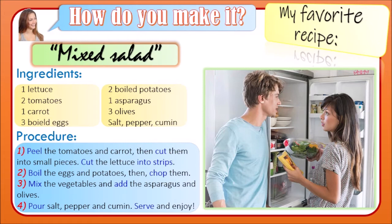Now we continue with the recipe, since it's part of your video exposition. The question is: how do you make it? How do you design and prepare your recipe? We're going to talk about mixed salad. According to this recipe, first we consider the ingredients: one lettuce, two tomatoes, one carrot, three boiled eggs, two boiled potatoes, one asparagus, three olives, salt, pepper, and cumin.